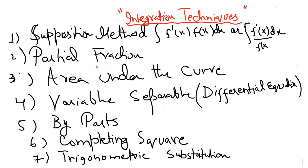The second technique is partial fraction. We apply the partial fraction technique when the denominator can be factorized, like 1 upon x square minus 1, which means 1 upon x plus 1 and x minus 1 can be written and easily expressed in the form of partial fraction.